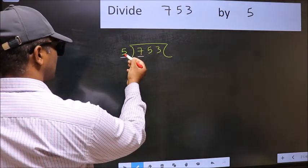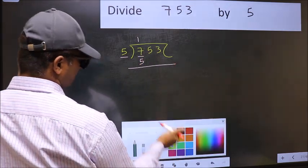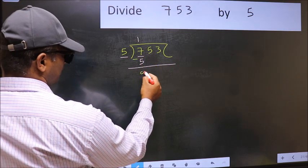Here we have 7 and here 5. A number close to 7 in the 5 table is 5 once 5. Now you should subtract. 7 minus 5, 2.